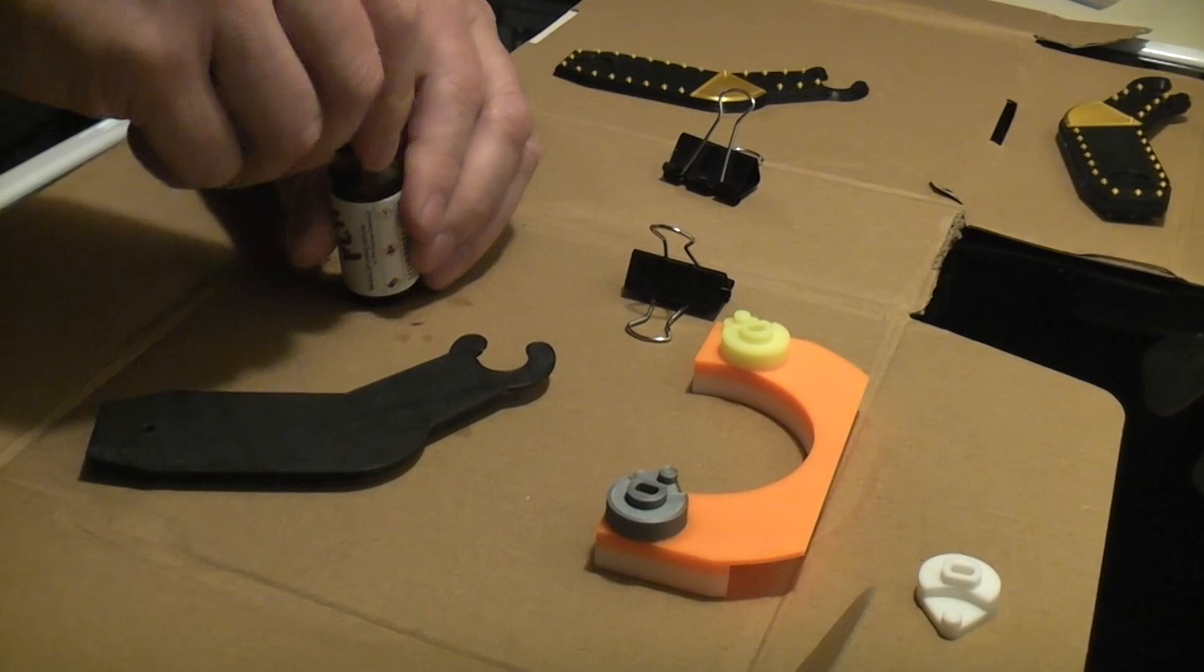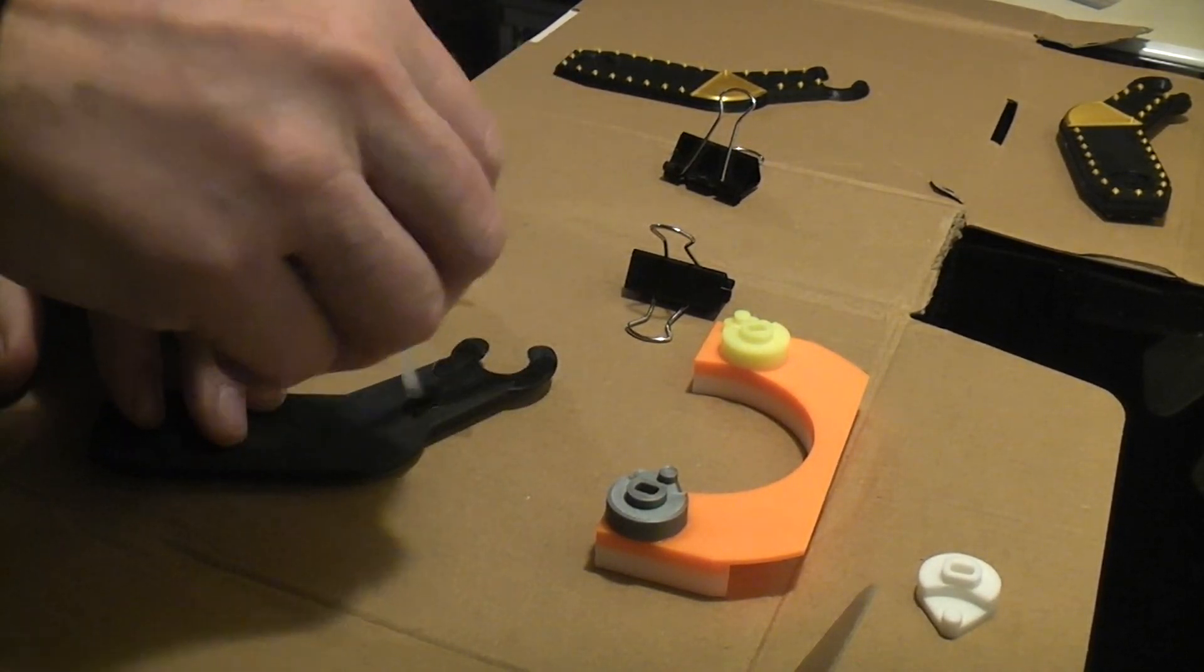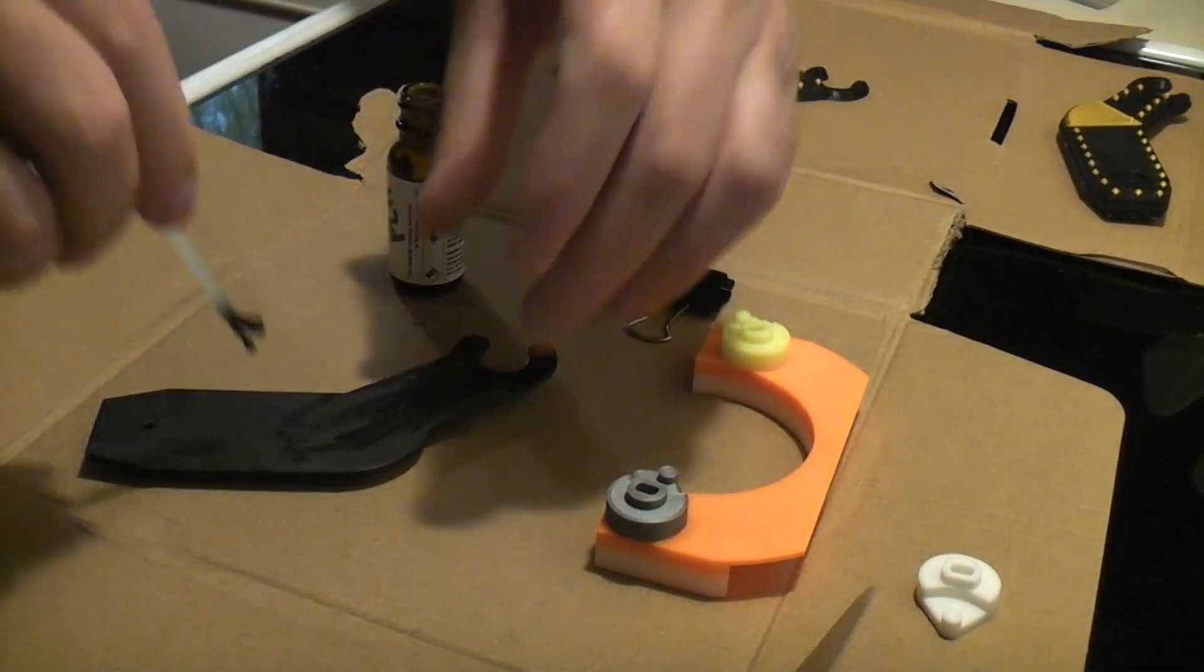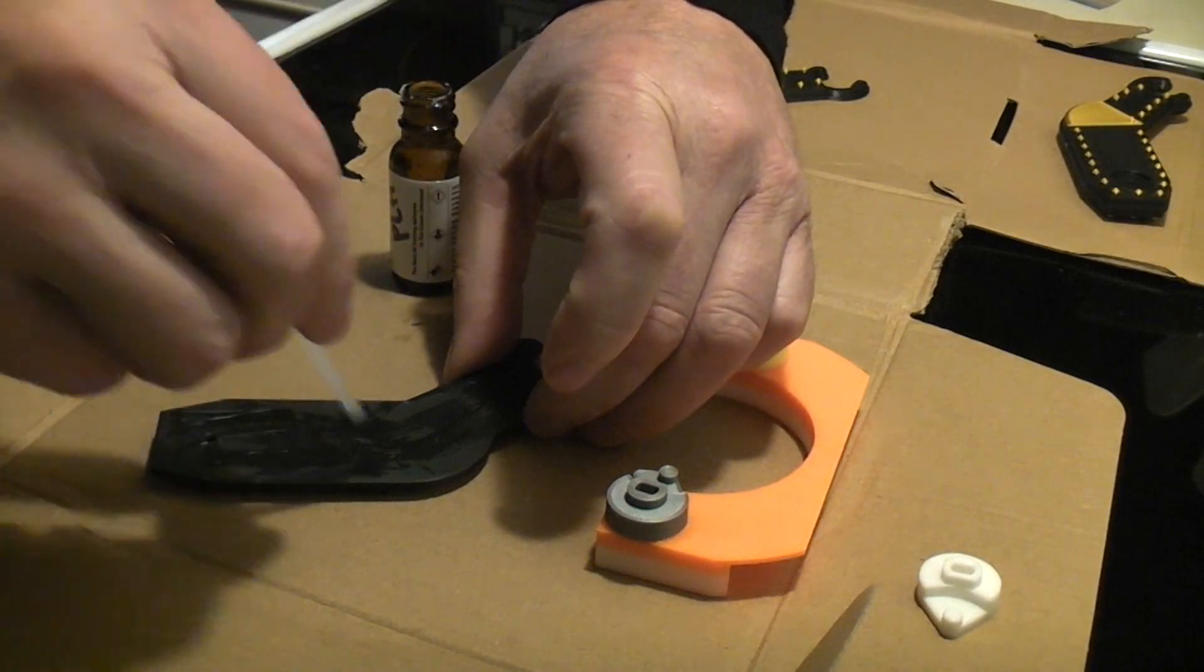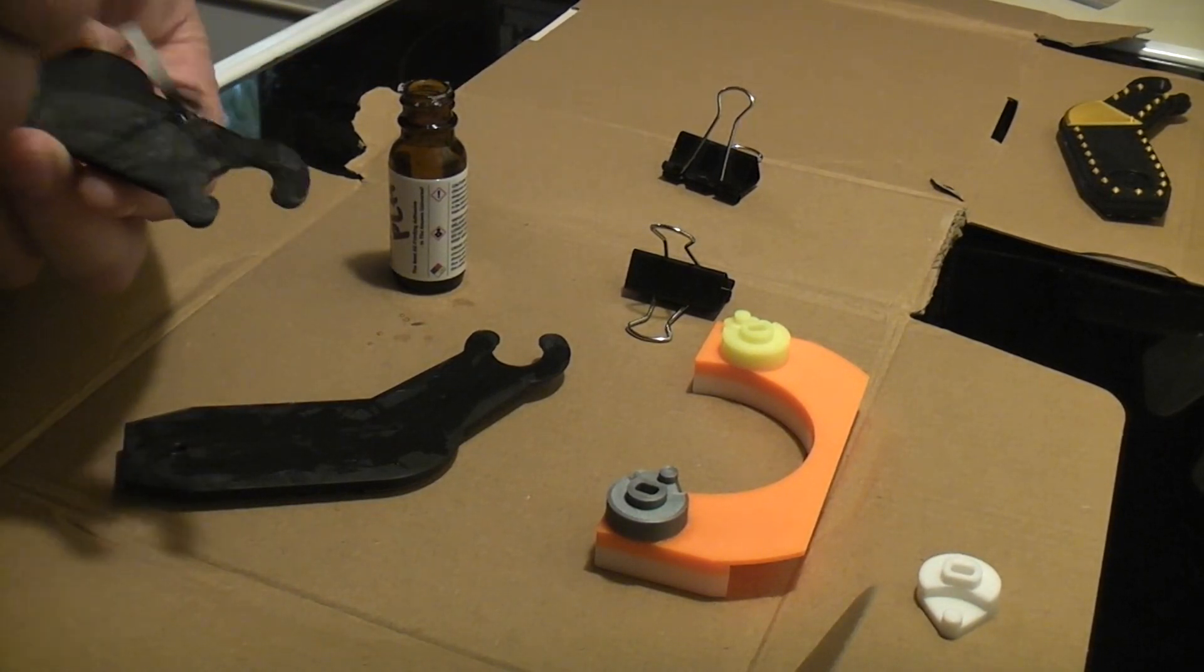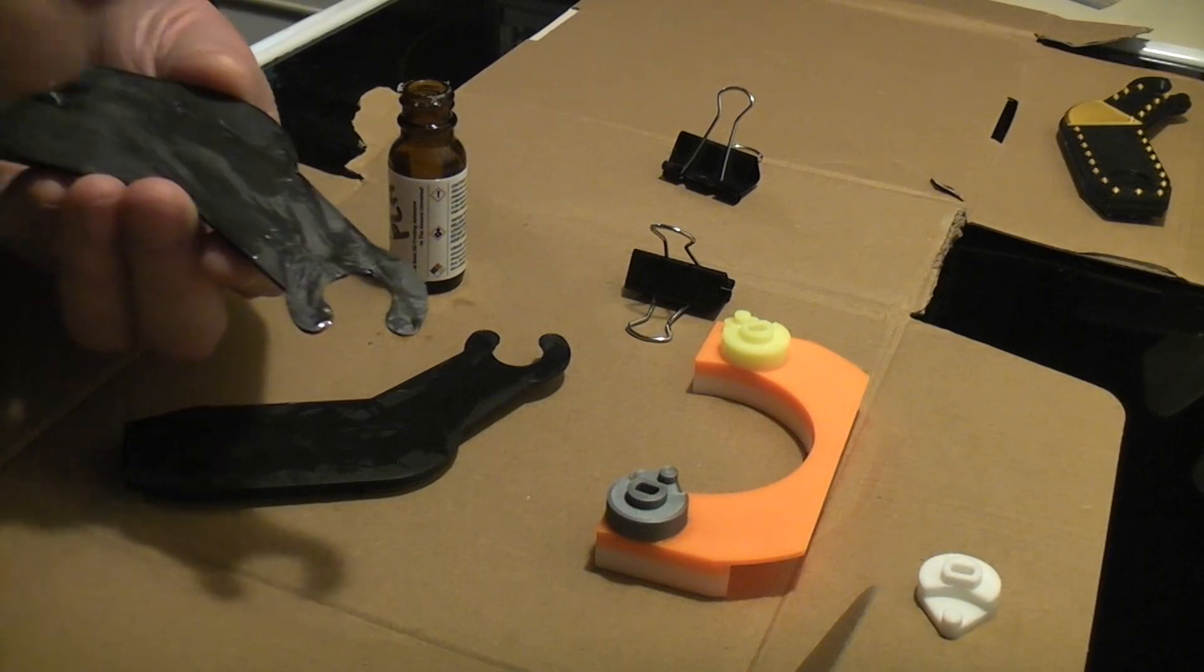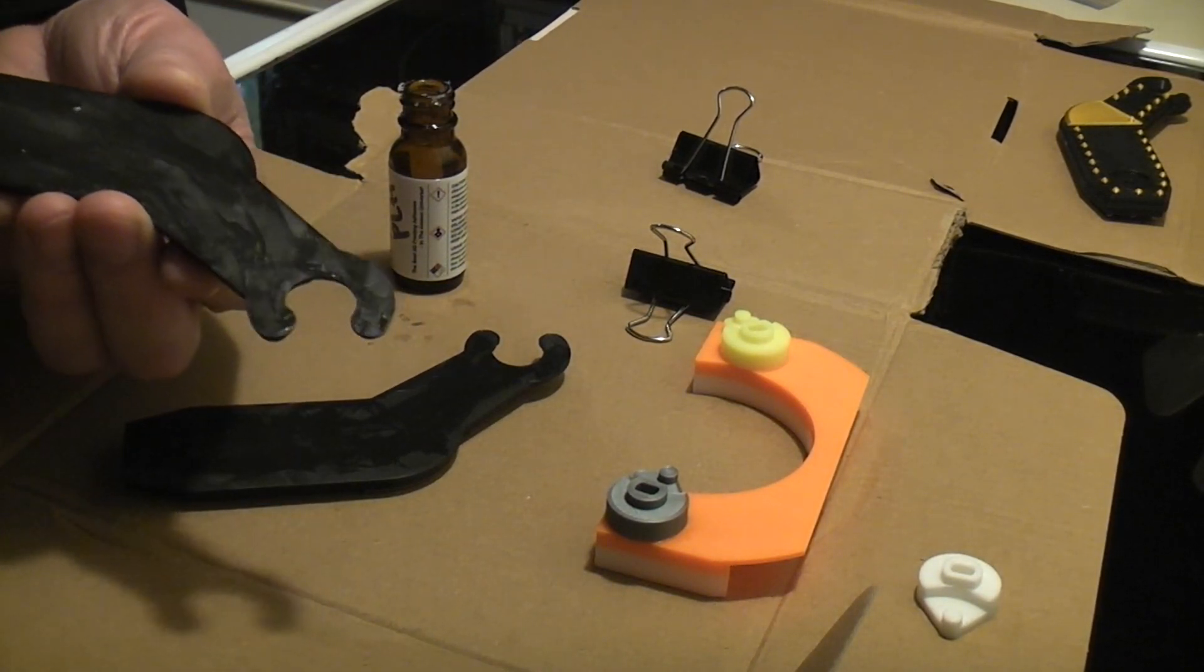The instructions on the website say to apply this to both pieces, and it doesn't really need to have it absolutely everywhere on the part in this case. Since it's not really a structural part, it's not holding the weight of anything. It's just an arm on a robot project that you'll be seeing on my channel shortly.